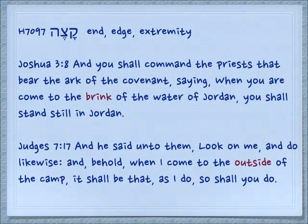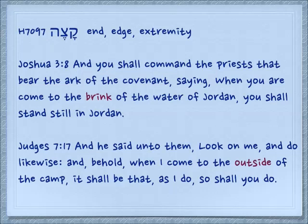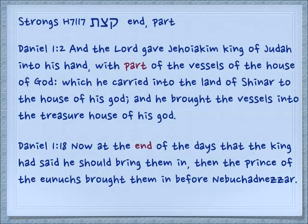Joshua 3:8 — And you shall command the priests that bear the ark of the covenant, saying, when you are come to the brink of the water of Jordan, you shall stand still in Jordan. It's the brink of the river, the edge of the river. Judges 7:17 — And he said unto them, look on me and do likewise, and behold when I come to the outside of the camp, the edge of the camp, it shall be that as I do so shall you do. Another similar form, katsat — Daniel 1:2 — And the Lord gave Jehoiakim king of Judah into his hand with part of the vessels of the house of God.